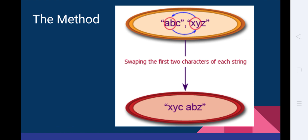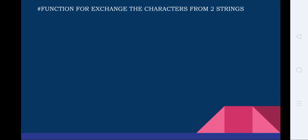This program is going to swap the first two characters of each string. The first string is 'abc' and the second string is 'xyz'. Interchanging the first two letters of the first word with the second word — so 'ab' is exchanged with 'xy', meaning the new string will become 'xyz'. This is the transformation to be done, and then we join those characters using the concatenation operator.